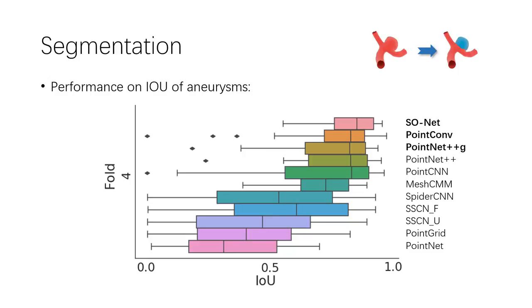We selected 11 networks — PointGrid, two kinds of SSCNs, PointNet, two kinds of PointNet++, PointConv, PointCNN, SpiderCNN, MeshCNN, and Sonnet — to provide segmentation benchmarks. Sonnet showed excellent performance on IOU and DSC of aneurysms, while PointConv had the best result on blood vessels.